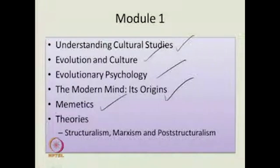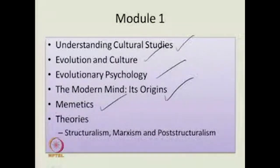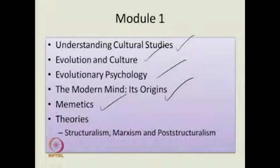Then we went on to look at three theoretical schools of cultural studies, with the caveat that there are other schools which we shall be dealing with in other modules. For instance, when you speak of gender, that is when feminism would come in as a theoretical school. Just to give you an example of how people theorize regarding culture, we took up structuralism, Marxism, and post-structuralism.